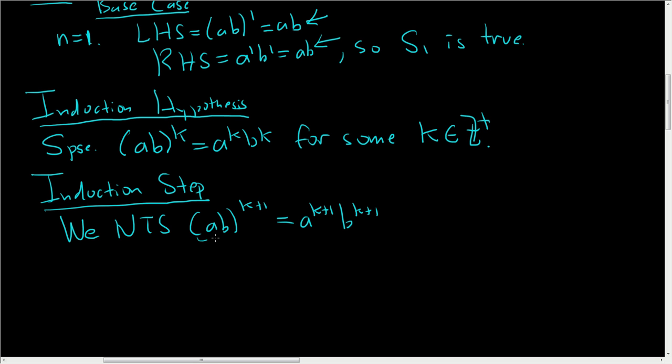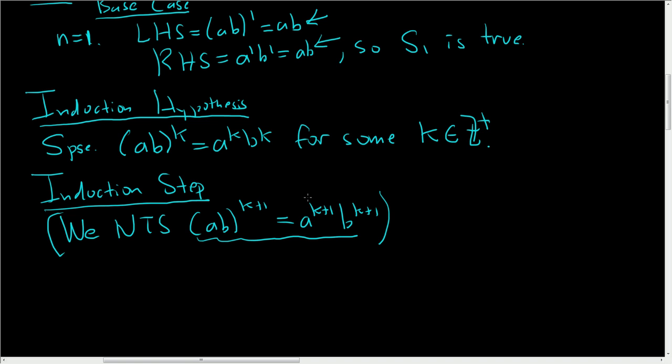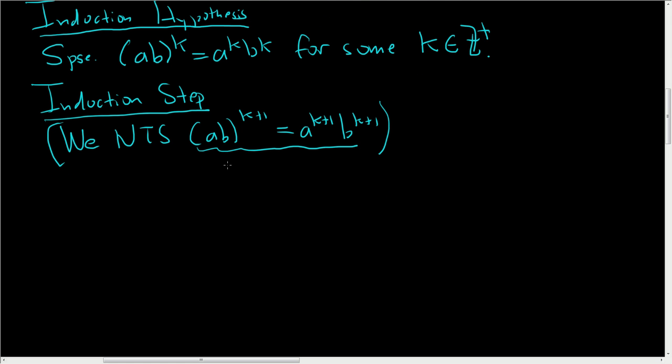Now, if you just write this down, without writing 'we need to show,' someone can read your proof and think that you don't know what you're doing. So we need to actually prove this, right? It's important that if you write it down, maybe you go to the side. That's why I put it in parentheses. This is not part of the proof. This is just for our own benefit, so we can prove it.